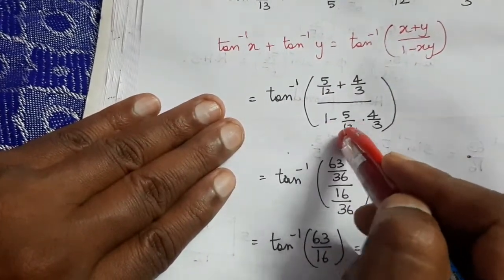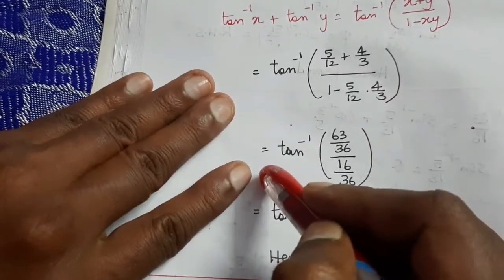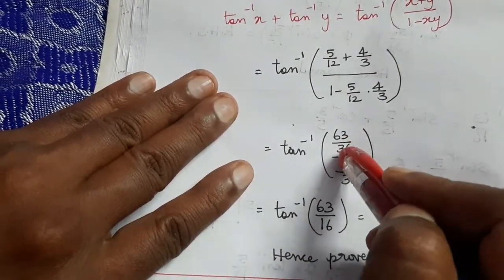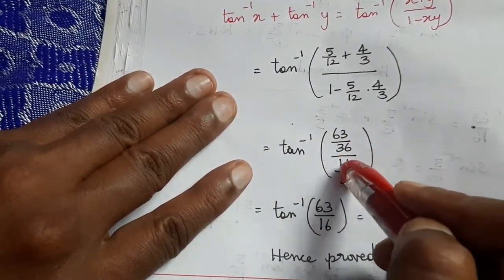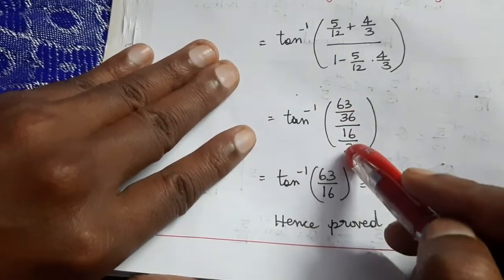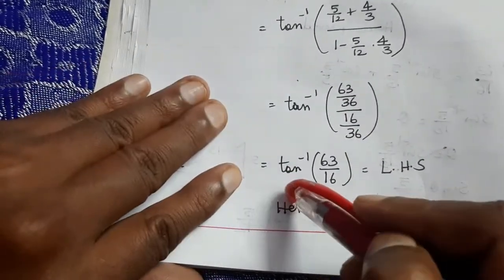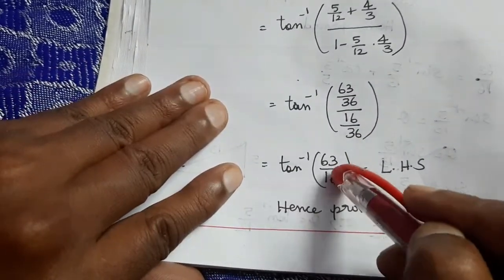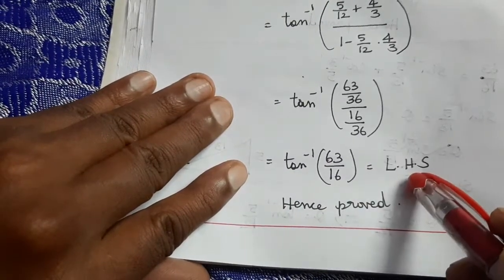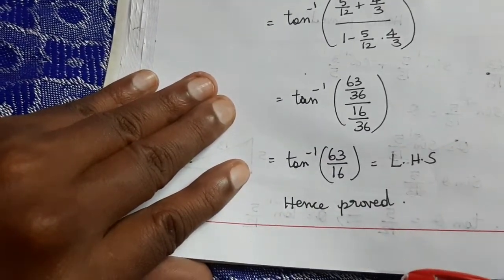Simplifying: tan⁻¹((63/36) / (16/36)) = tan⁻¹(63/16) = LHS. Hence proved. Thank you.